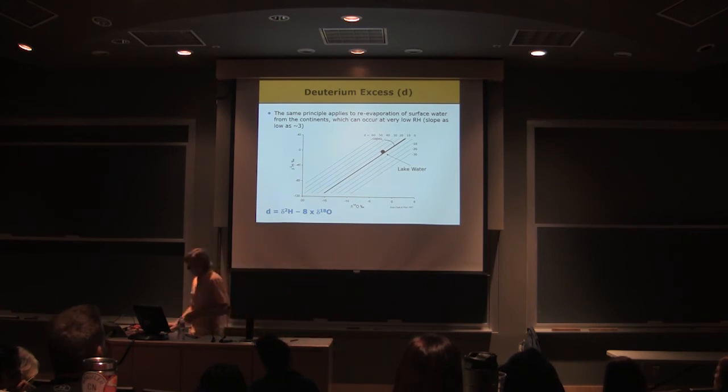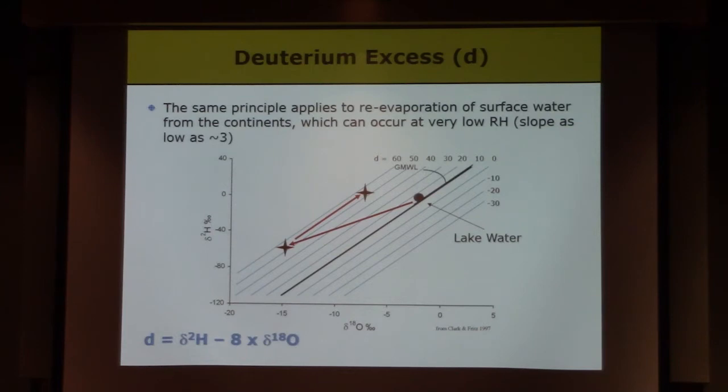And let's say we have conditions of very low relative humidity. We're going to get a very low slope of our evaporation line, okay. And so we're going to produce water vapor from that lake that may have a very, very high deuterium excess value.